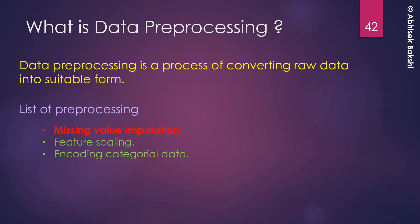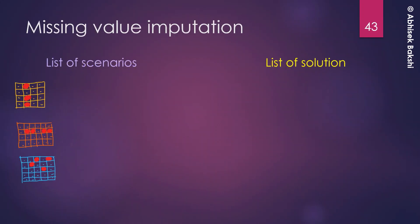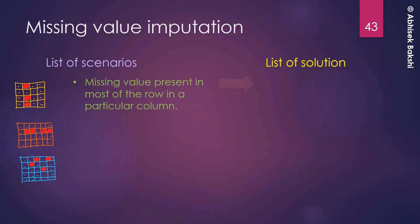Let's start with missing value imputation. By the name you can understand that something — some value — is missing. I have created a list of scenarios with corresponding solutions. On the left you can see images of some tables; just assume each table represents a dataset. These three different tables represent three different scenarios.